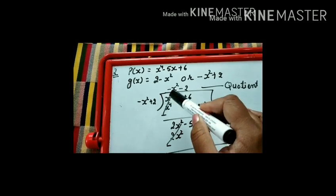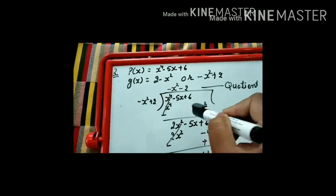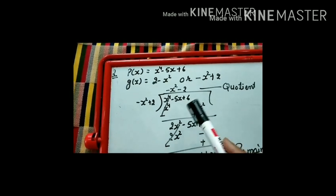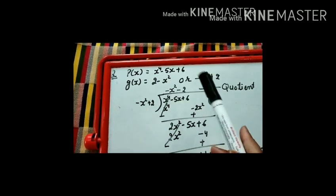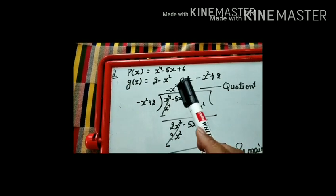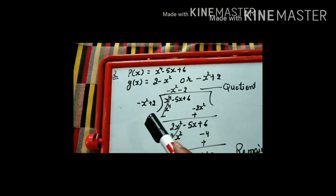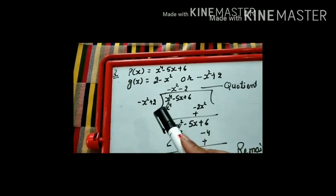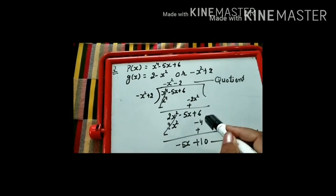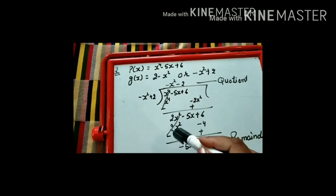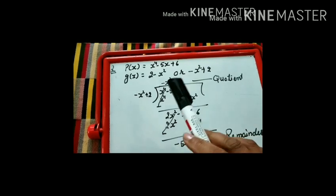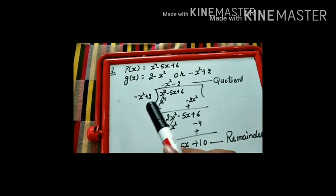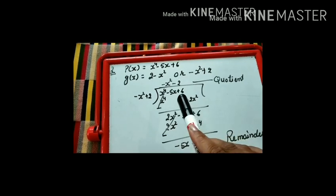We change the sign and cut the same terms. Below we get 2x² - 5x + 6. We bring down that term. We multiply -x² by -2 to get 2x², and -2 by +2 to get -4. After sign change and cancellation, we get -5x + 10 as our remainder. The quotient is -x² - 2, the divisor is g(x), and the dividend is p(x).